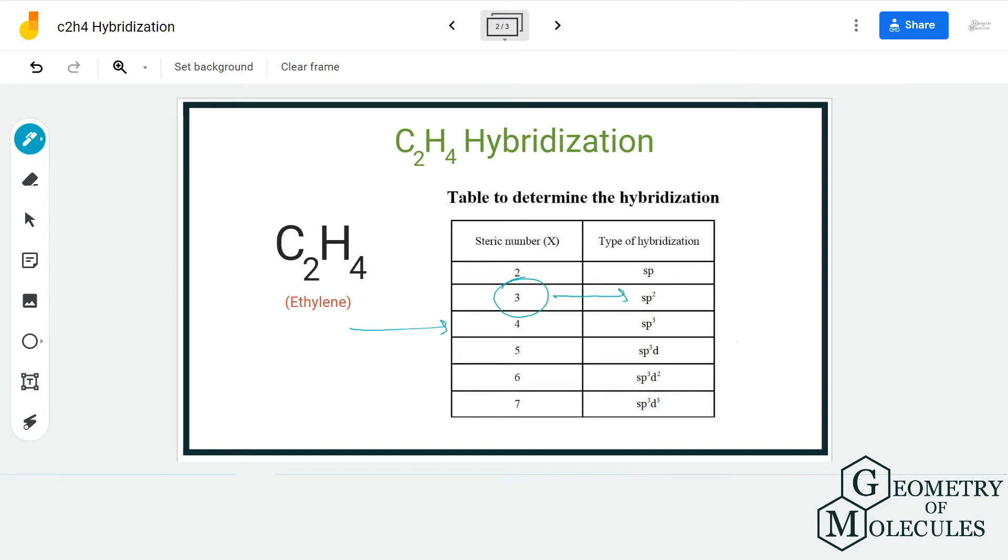So both carbon atoms will have sp2 hybridization, and as a result, the hybridization for C2H4 molecule will be sp2. I hope this video helps you to understand the hybridization of C2H4.